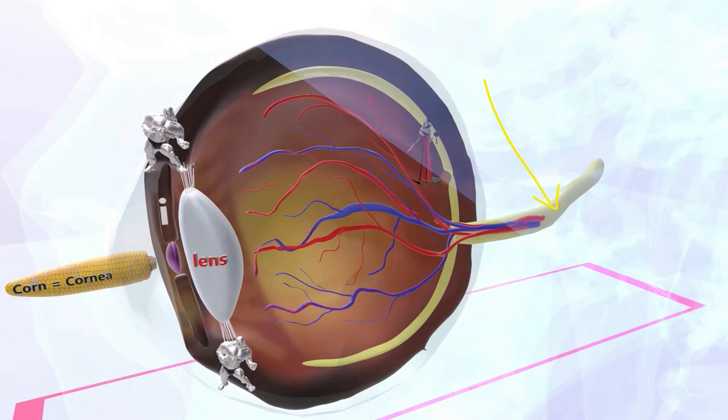We mentioned also that the outer layer of the eye is known as the sclera, but there's also a middle layer and this is known as the choroid. The choroid supplies nutrients to the retina. It also maintains the temperature of the eye due to its high vascularity.